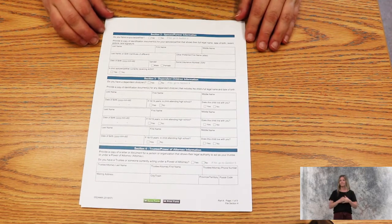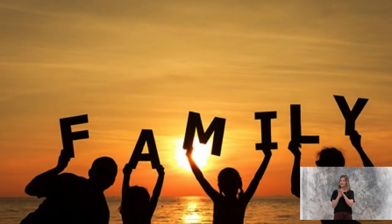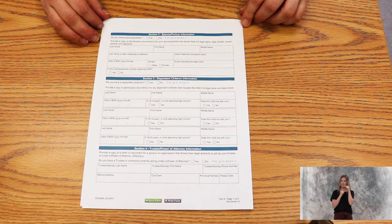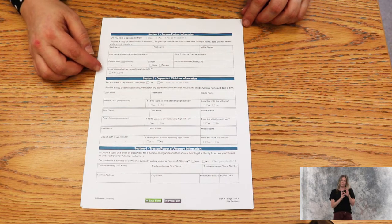The next section, section two, is about your spouse or your partner. You will need to provide legal ID for them to photocopy at the appointment. They will also need to know if your partner is currently receiving AISH.